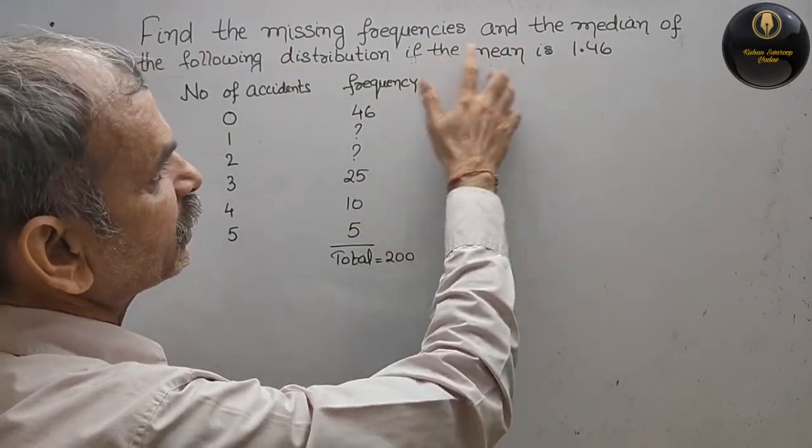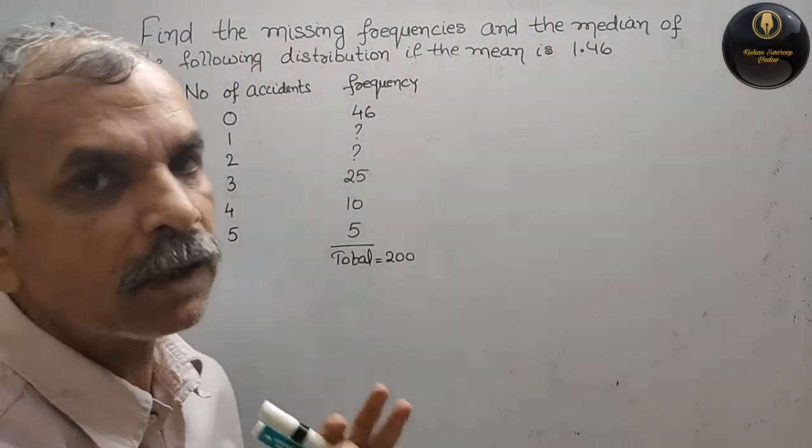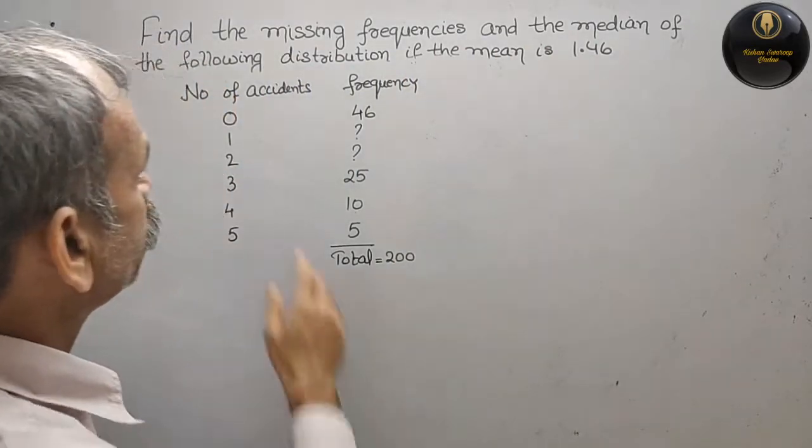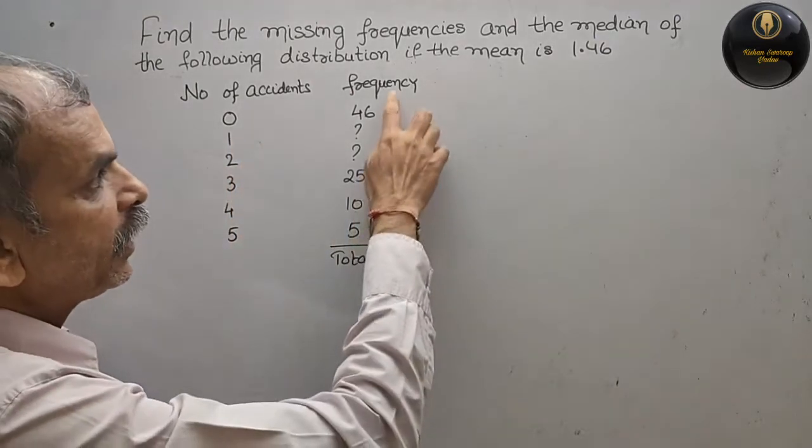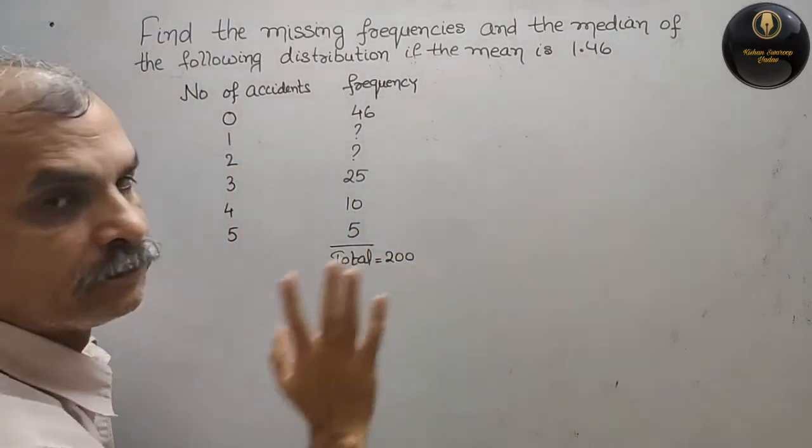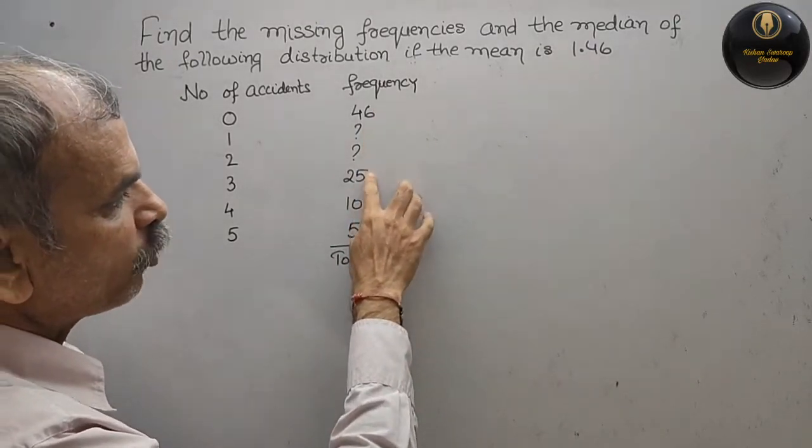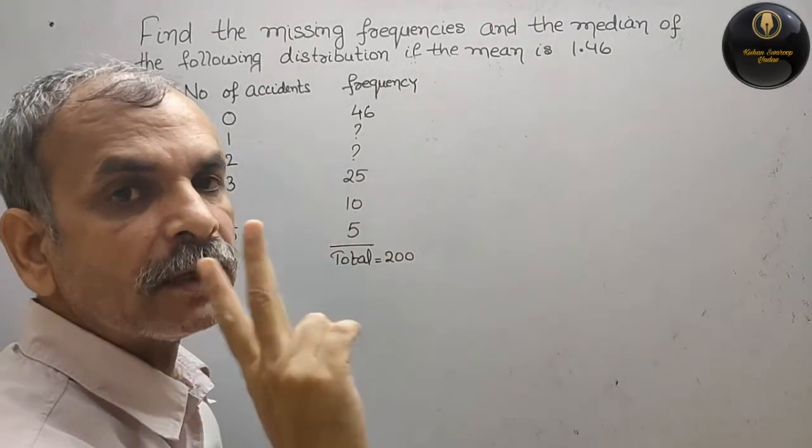Find the missing frequencies and the median of the following distribution if the mean is 1.46. They have given you number of accidents here 0 to 5. Here they have given the frequency, so that is your 46, question mark, question mark, 25, 10, and 5. That means two frequencies are missing.